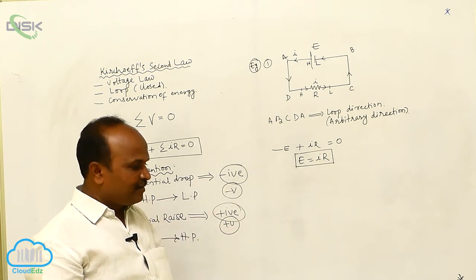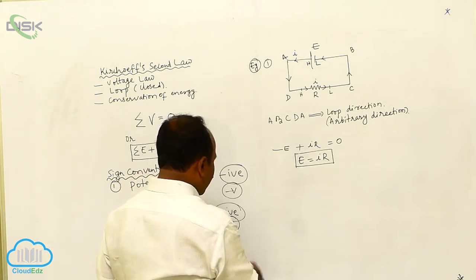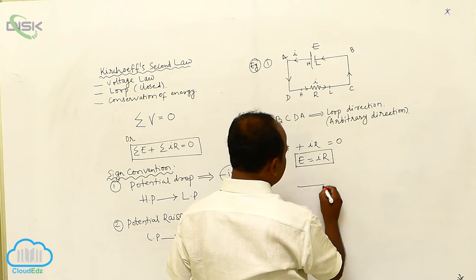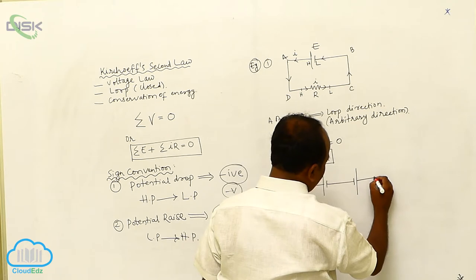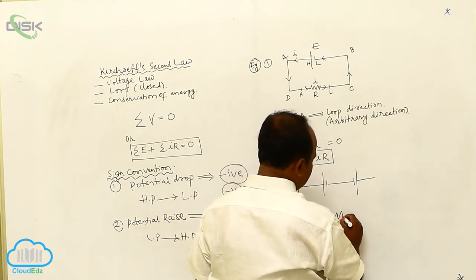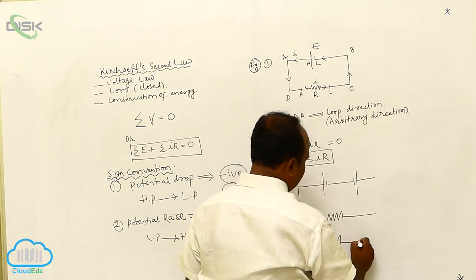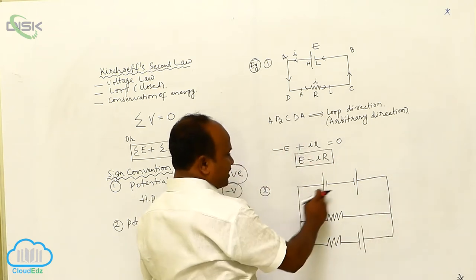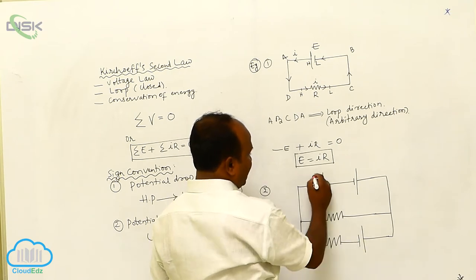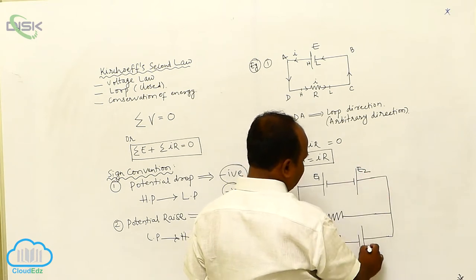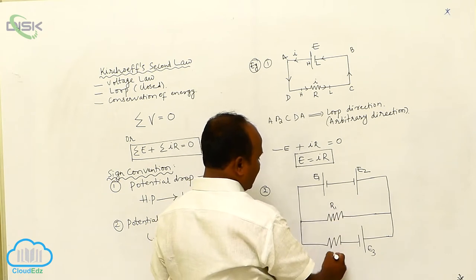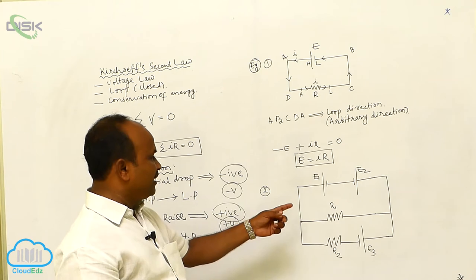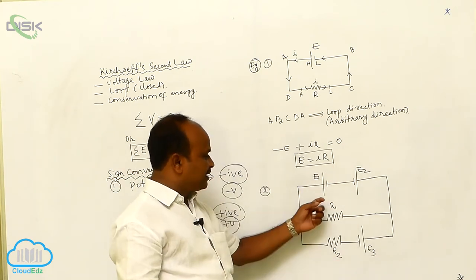Next, I will take another electrical circuit. In this new circuit, there is a first cell, a second cell, and a third cell. There is also a first resistor R1 and a second resistor R2. So there are three cells: E1, E2, and E3, and two resistors: R1 and R2. After observing, name the circuit: A, B, C, D, E.